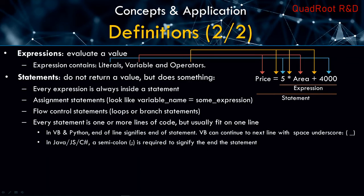Every statement is one or more lines of code, but usually fits on one line. In VBA and Python, the end of the line signifies the end of the statement — though in VBA you can continue to the next line with a space underscore. In Java, JavaScript, and C#, a semicolon is used to signify the end of a statement, telling the computer to move on to the next one.